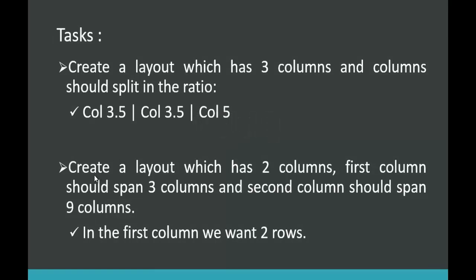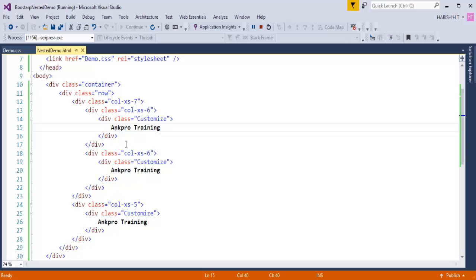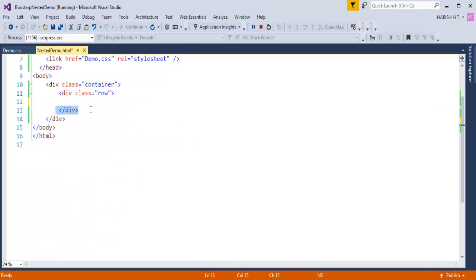Now let us complete the second task. The second task is to create a layout which has two columns: the first column should span 3 columns and the second column should span 9 columns. Since 3 plus 9 equals 12 it satisfies the Bootstrap grid. I will remove the previous columns and create a new row with a col-xs-3 div and a col-xs-9 div with Angpro Training content.